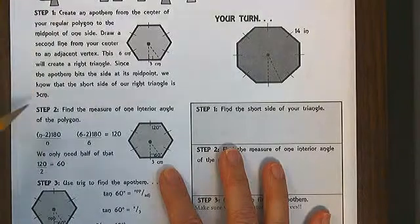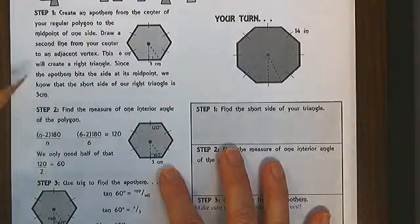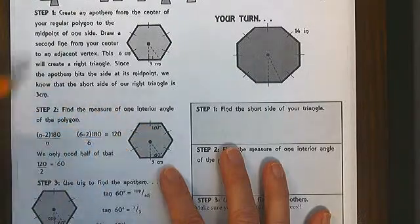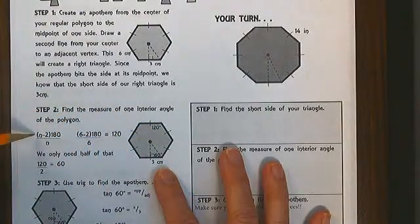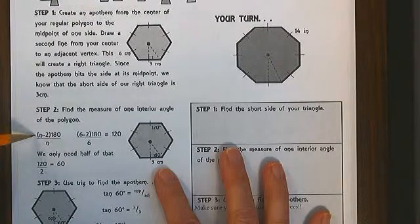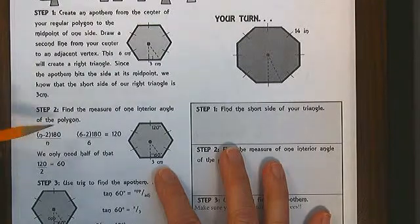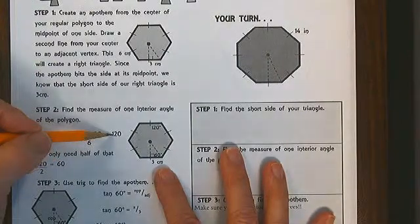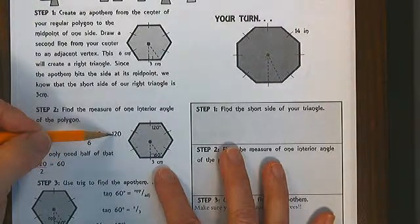So now we need to find the measure of one interior angle. We have a hexagon. We find that one interior angle, because we've already studied this, we know how to do that, is 120 degrees.